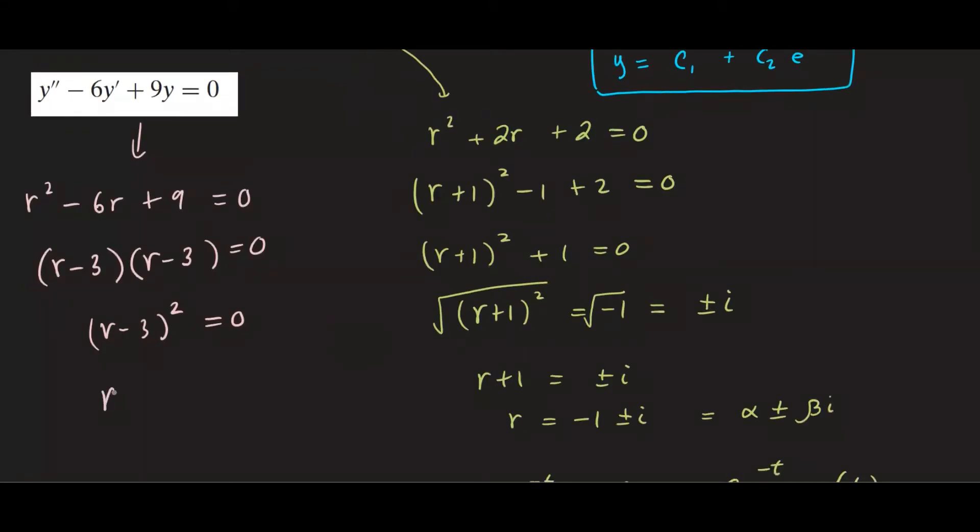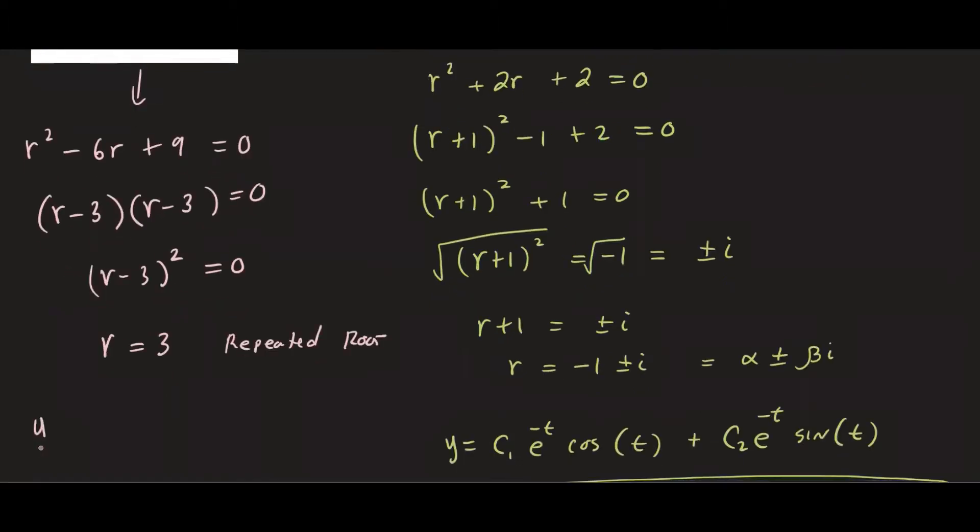So this gives us only one root which is 3. So this is when we call it the repeated root. So it's repeated twice because of the power 2.